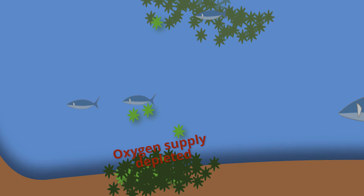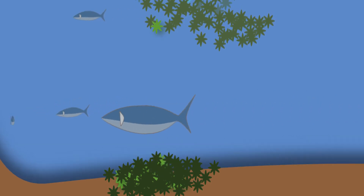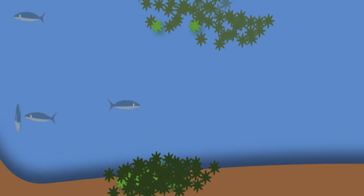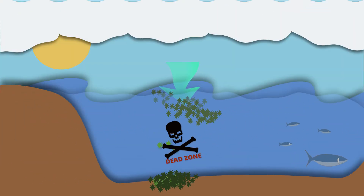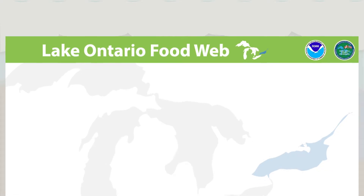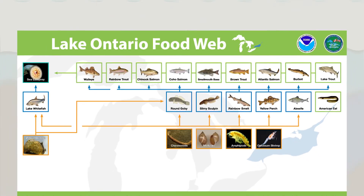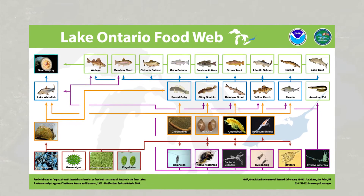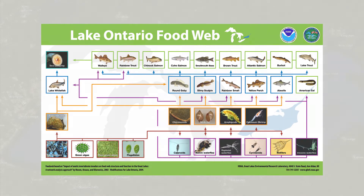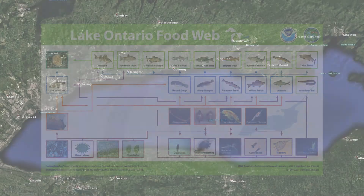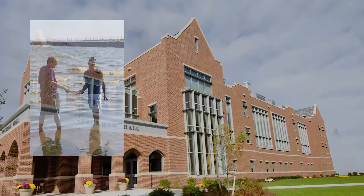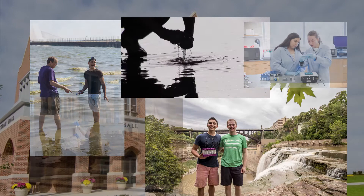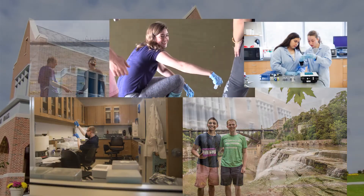Algae blooms can also cause a decrease in the oxygen content in the water. These dead zones actually reduce life, and that can harm the environment of fish and other marine life which need oxygen in the water in order to survive.